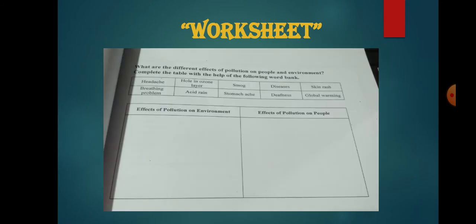Now comes to page number two of this worksheet. What are the different effects of pollution on people and environment? Complete the table with the help of the following word bank. Here you can see that there is a word bank given and there is a table with two columns: effects of pollution on environment and effects of pollution on people.